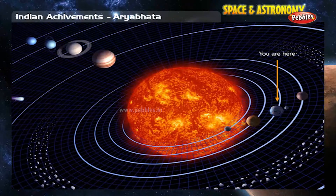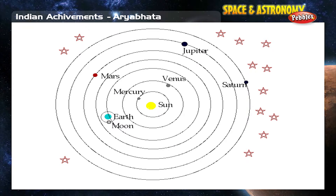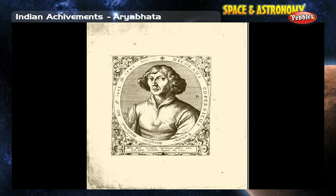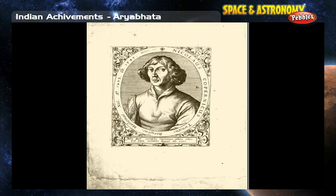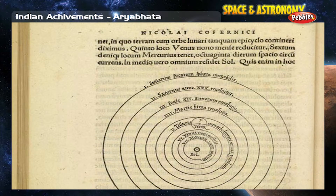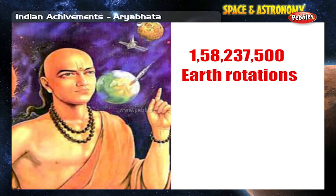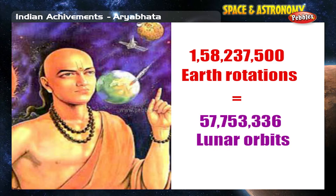Arabic translations of Aryabhata's Aryabhashya were available from the 8th century, while Latin translations were available from the 13th century, before Copernicus had written. So it's quite likely that Aryabhata's work had an influence on Copernicus' ideas.